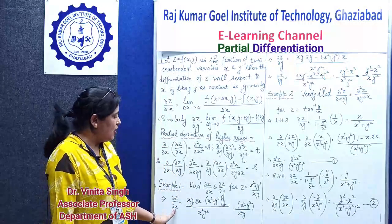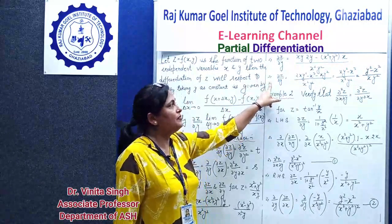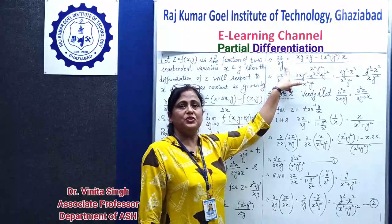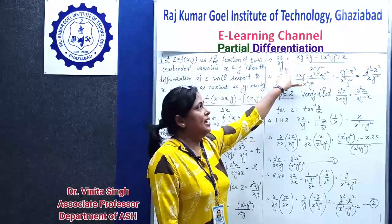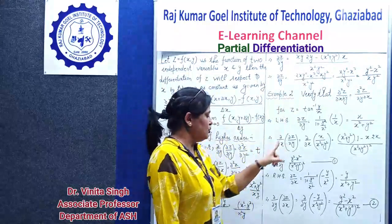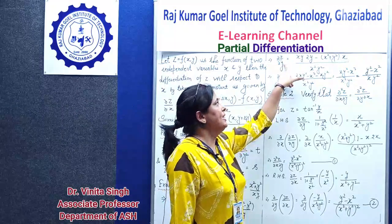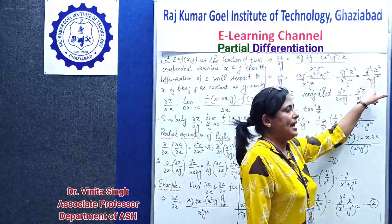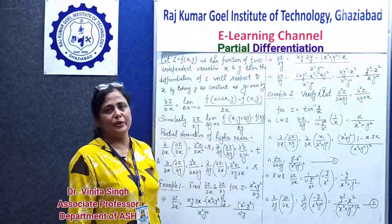After solving, you get (x² − y²) / x², which simplifies to (x² − y²) / (x²y). Similarly, for ∂z/∂y, you take x as constant and apply the quotient rule again. Following the same procedure, you get ∂z/∂y = (y² − x²) / (xy²). This completes the first order partial differentiation.